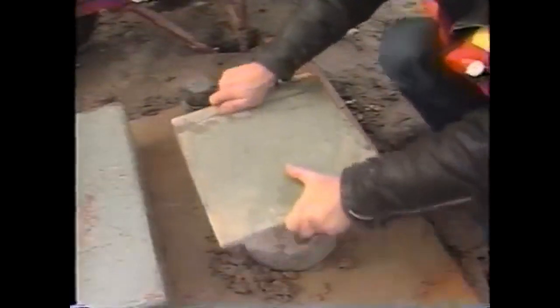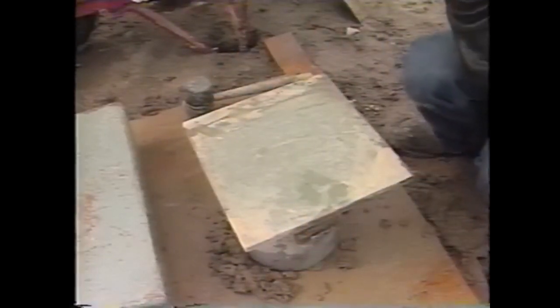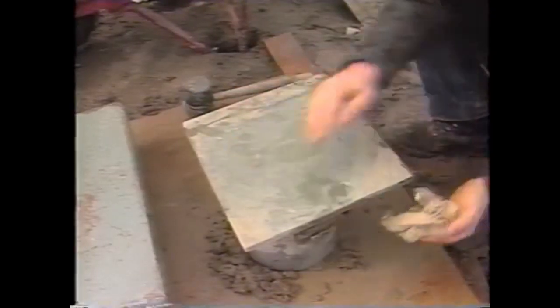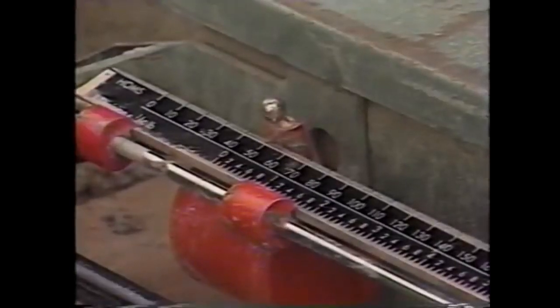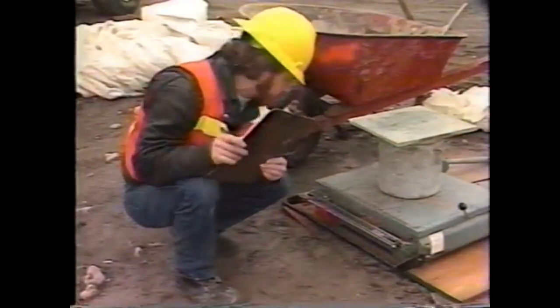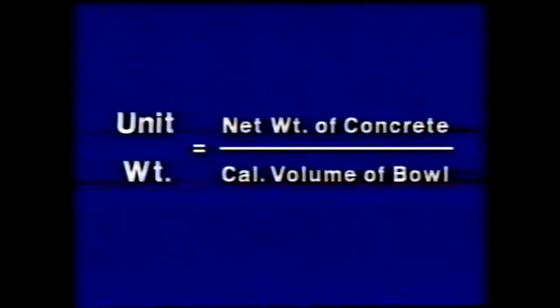The concrete surface is struck off and finished using the strike-off plate — the bowl must be exactly level full. Then all excess concrete is cleaned off the outside of the bowl, and the filled bowl and strike-off plate are placed on the scale or balance. The net weight of the concrete is determined by subtracting the empty weight of the bowl from its filled weight. To calculate the unit weight, the net weight is divided by the calibrated volume of the bowl.